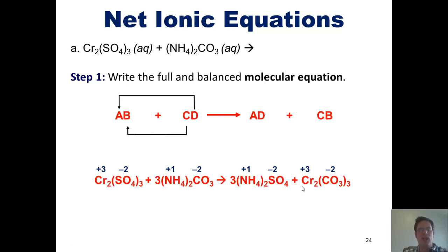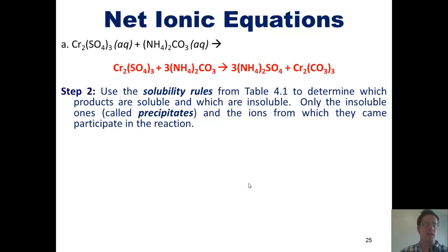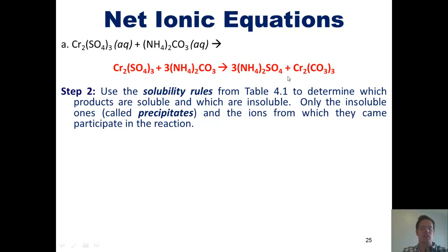The last thing we do now is balance the chemical equation by putting coefficients in front of all species as necessary. I have done this already, and I'm anticipating that you can do it on your own. If not, then practice. Now that we've done step 1, we move on to step 2, which says to use the solubility rules to determine which products are soluble and which are not in water.